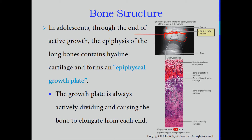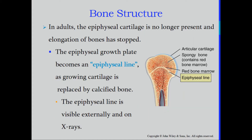When you look at that x-ray, it appears that the end of the bone is separate from the metaphysis, but technically it's not — the cartilage just doesn't show up. The growth plate is always actively dividing and causing the bone to elongate from each end; this is how we get taller as we grow until puberty, when that slows down. In adults, the epiphyseal cartilage is no longer present and elongation has stopped. The epiphyseal plate becomes the epiphyseal line.